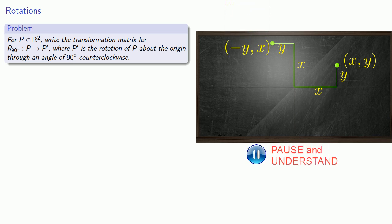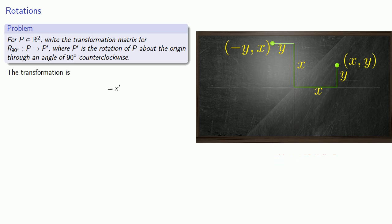Algebraically, our transformation gives us a new x-coordinate of negative y and a new y-coordinate of x. Again, to be consistent, we write this as 0x plus negative 1y for the new x, and 1x plus 0y for the new y. The coefficients of these formulas give us our transformation matrix R90.